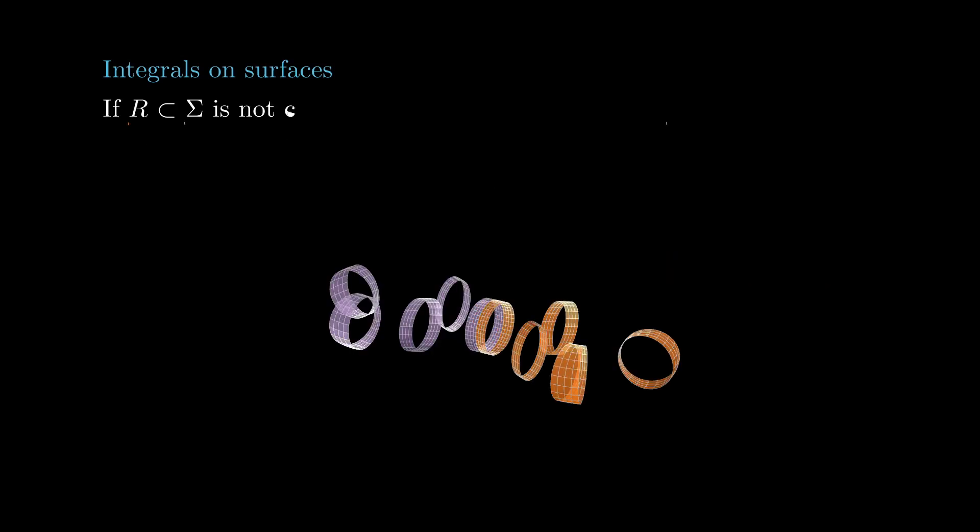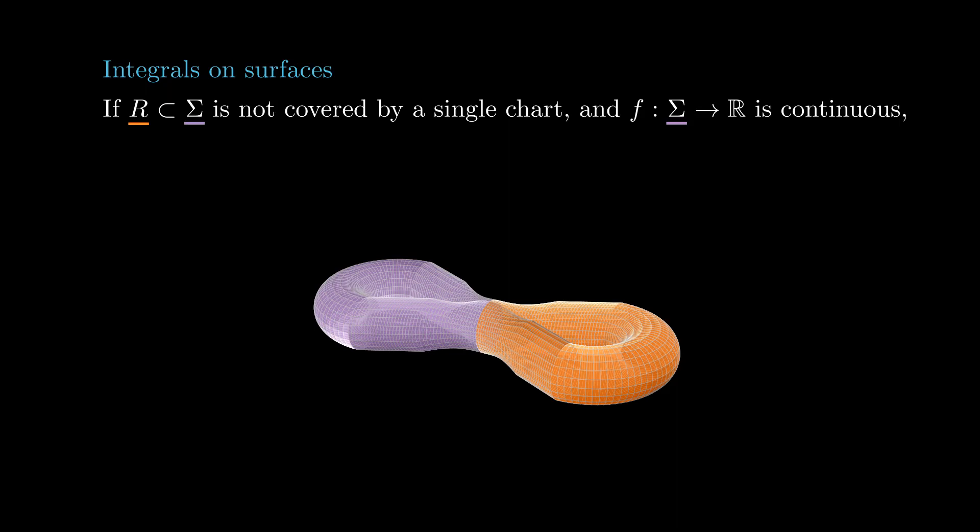If r is a region not covered by a single chart, we subdivide it into regions r1, r2, and so on, so that each ri is covered by a single chart, and then define the integral of the function f over the region r as the sum of the integrals of the function f over the regions ri.